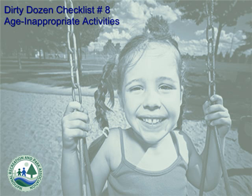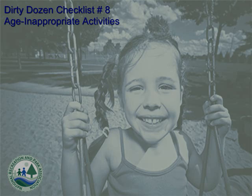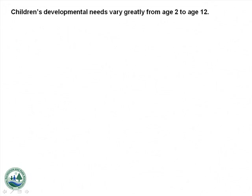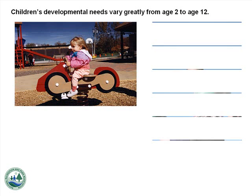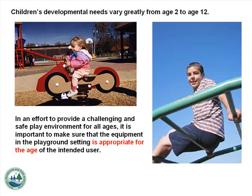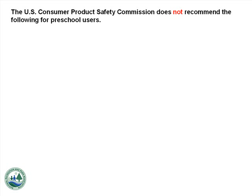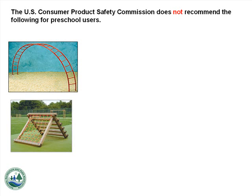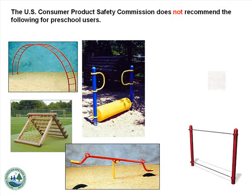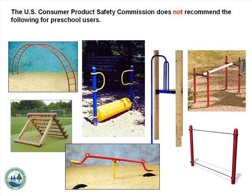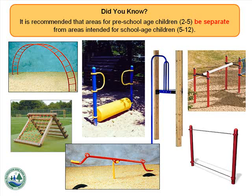Number 8: Age Inappropriate Activities. Children's developmental needs vary greatly from age 2 to age 12. The U.S. Consumer Product Safety Commission does not recommend the following for preschool users: freestanding arch climbers, freestanding flexible climbers, chain and cable walks, fulcrum seesaws, log rolls, track rides, or vertical sliding poles. It is recommended that areas for preschool-age children be separate from areas intended for school-age children.